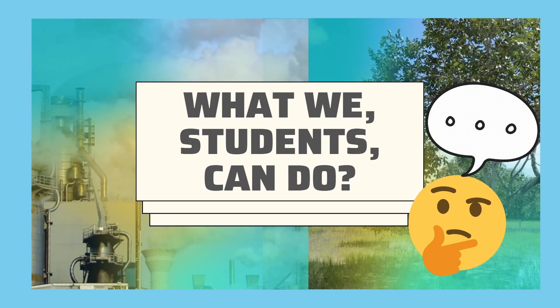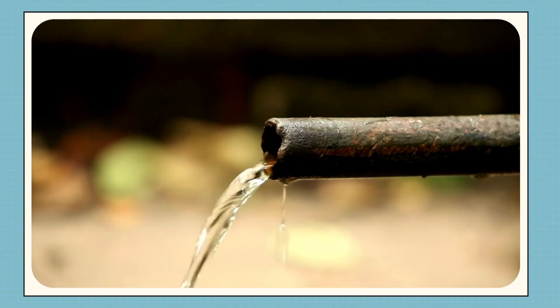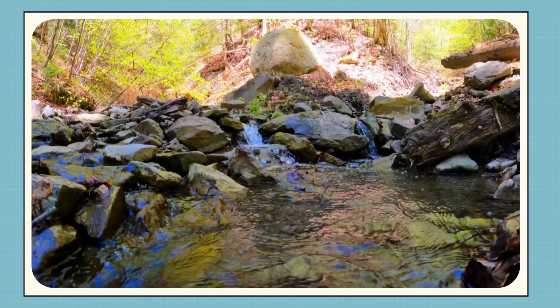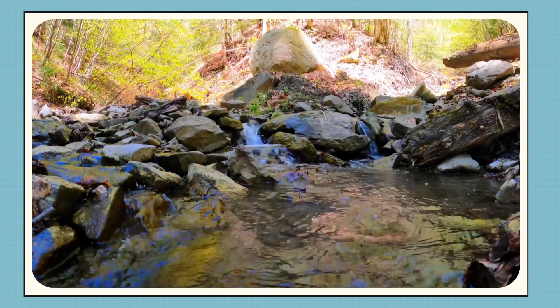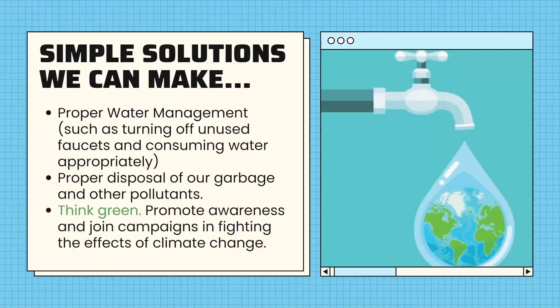As students, we can alleviate these problems in many ways, and that includes water conservation. Remember that water remains constant, but usable and potable drinking water isn't. If we start conserving water in our own ways, we can ensure availability of a clean and healthy water supply little by little. We can achieve that through efficient usage and proper management of water, such as turning off unused faucets and consuming only what is needed.